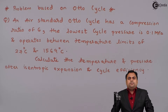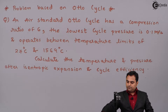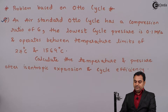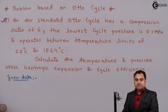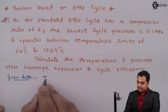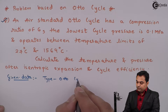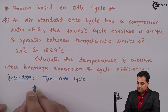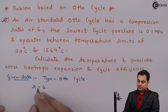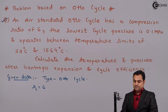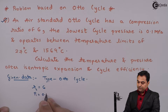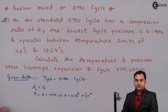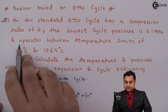Hello friends, in this video we are going to see a problem on the Otto cycle. Writing the data: it is given that an air standard Otto cycle has a compression ratio of 6, so r_c = 6. The lowest cycle pressure is 0.1 MPa, so p1 = 0.1 × 10^6 N/m².